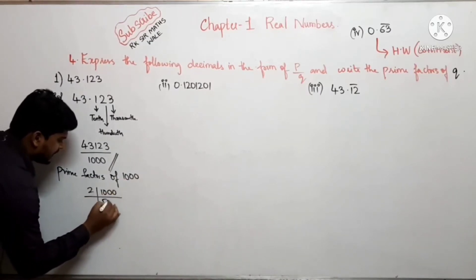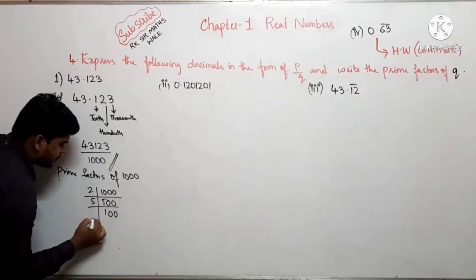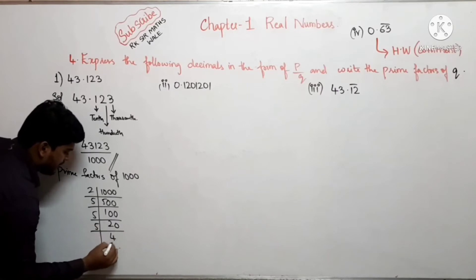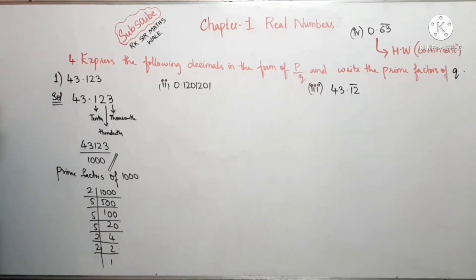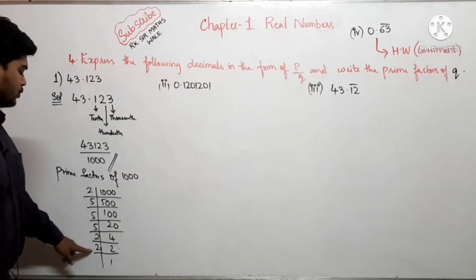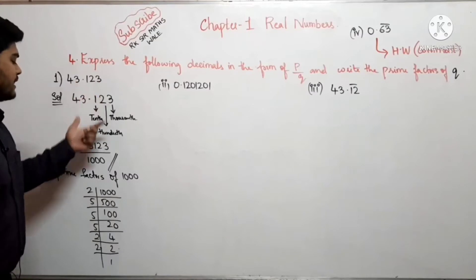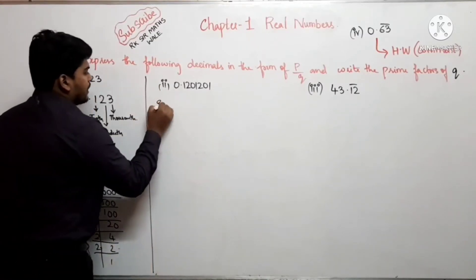Prime factors of 1000 निकालने पर हमें मिलते हैं 2 × 2 × 2 × 5 × 5 × 5, यानी 2³ × 5³ के form में। तो जैसा कि हम जानते हैं, यह एक terminating decimal है। आईए अब आगे करते हैं।